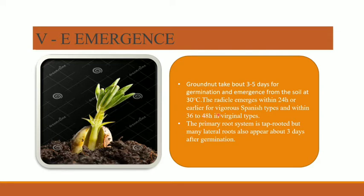Radical emergence occurs within 24 hours or earlier for vigorous Spanish types, and within 36 to 48 hours in Virginia types. There are two types of groundnut varieties: Spanish types and Virginia types. The primary root system is tap roots, but many lateral roots also appear about 3 days after germination.